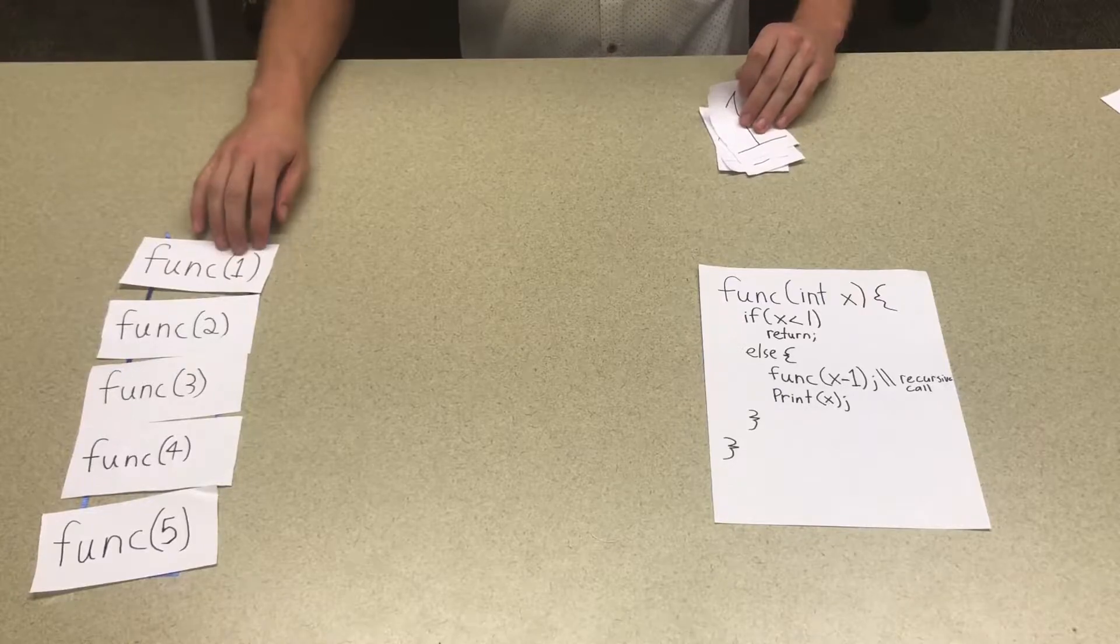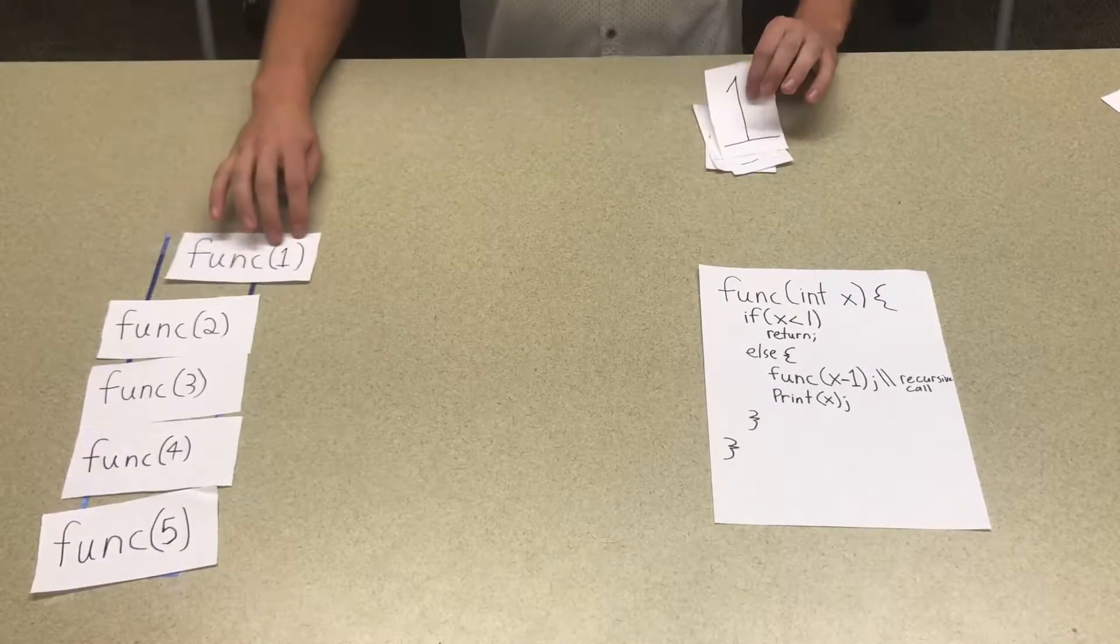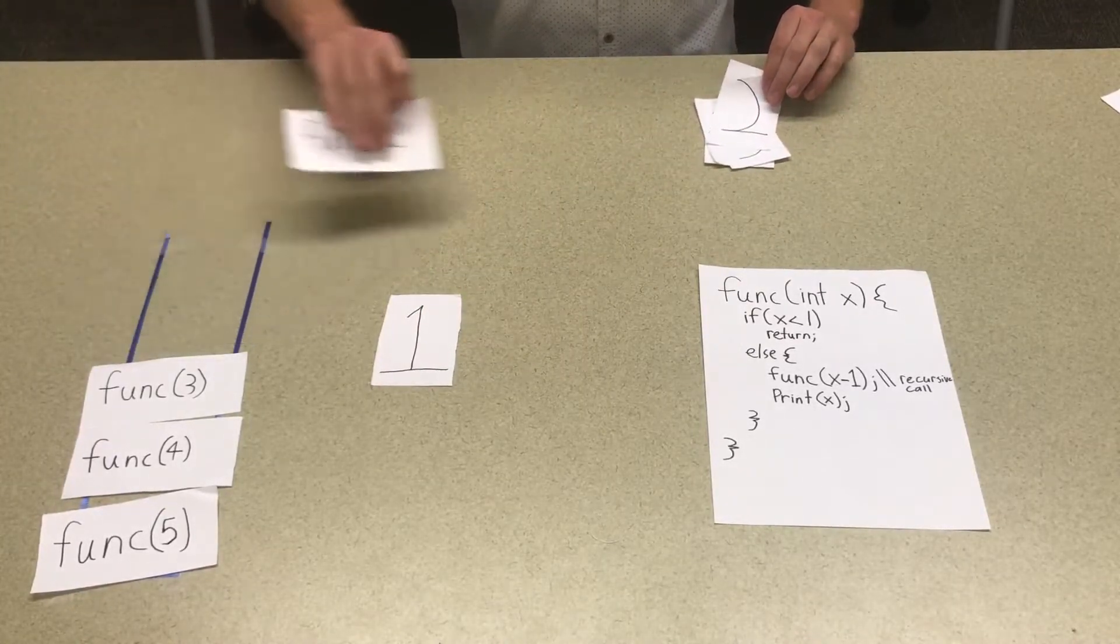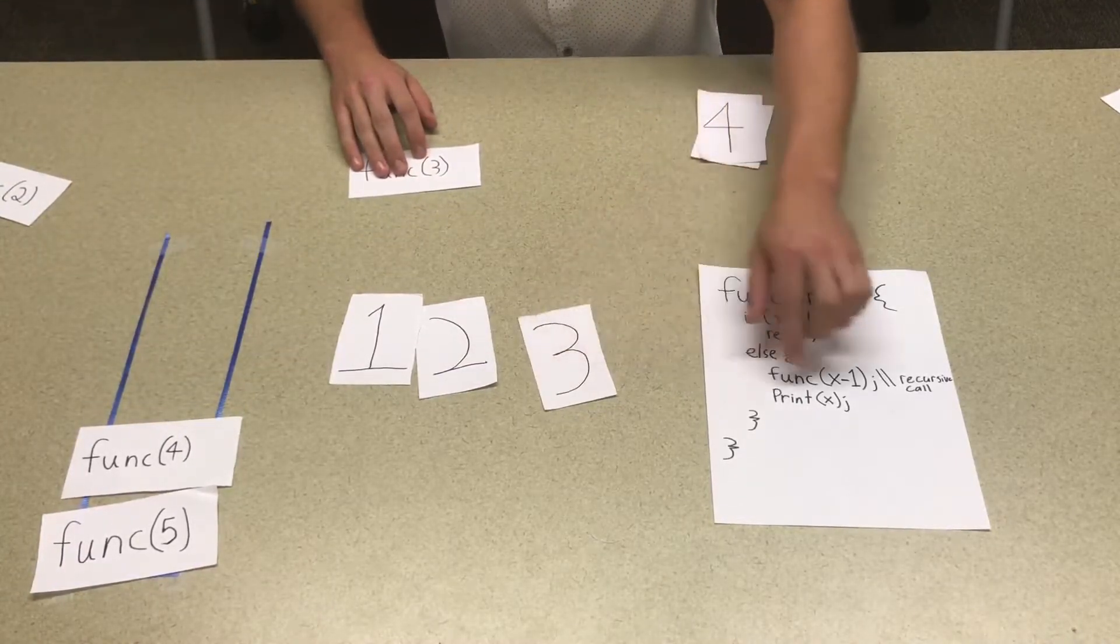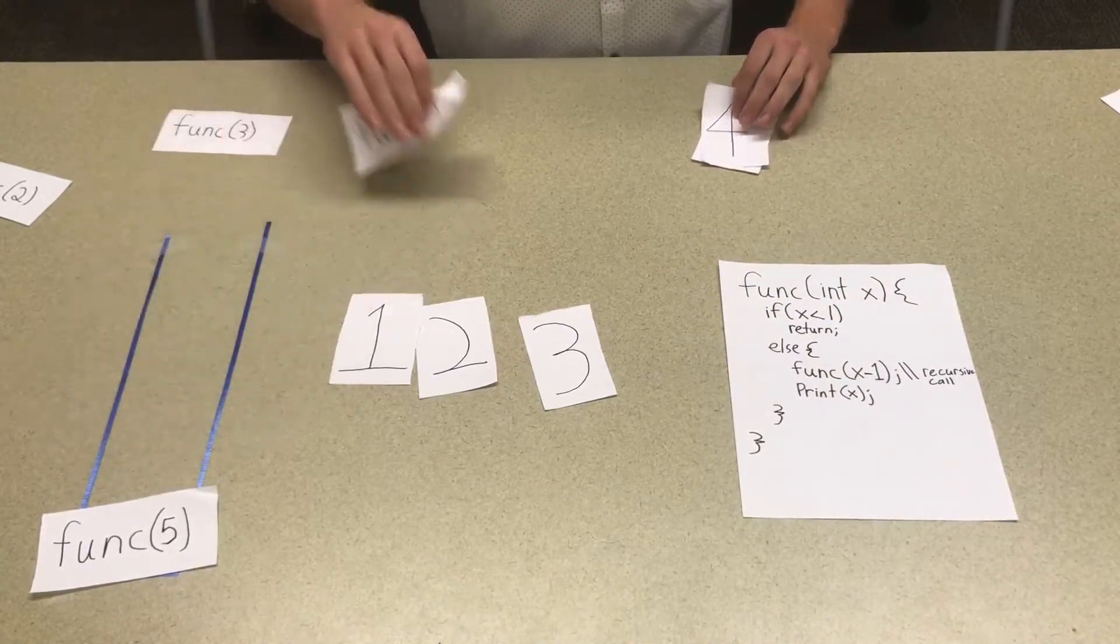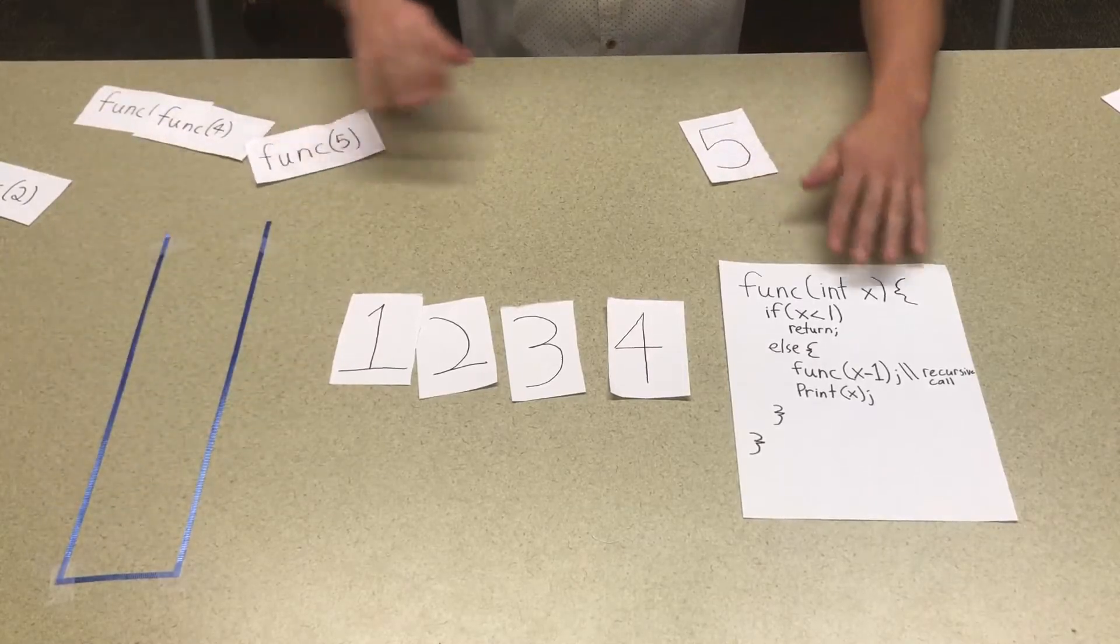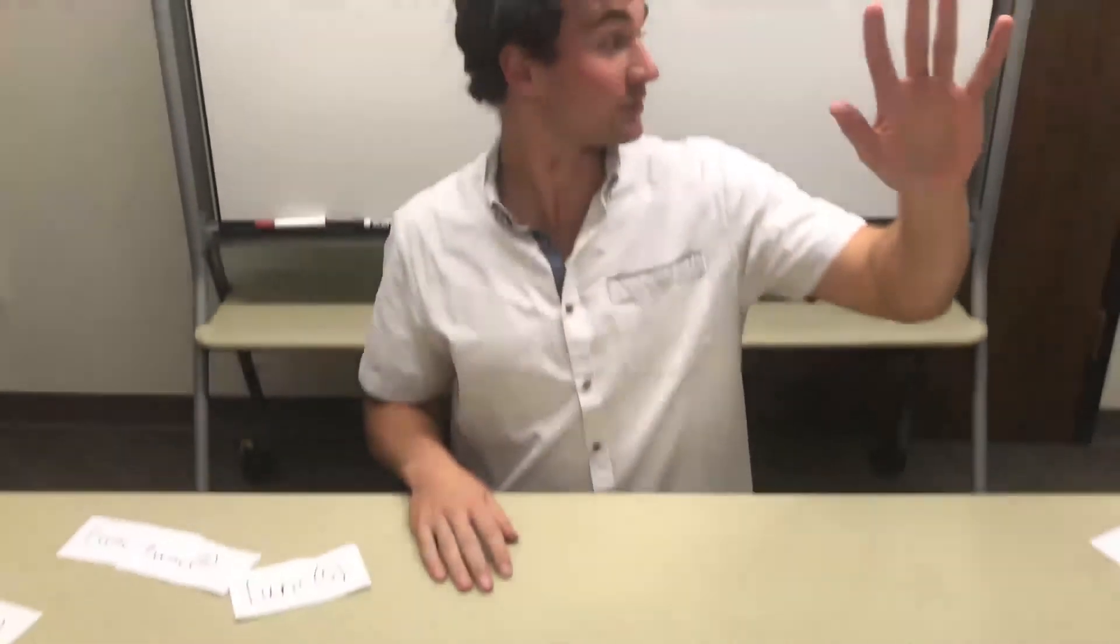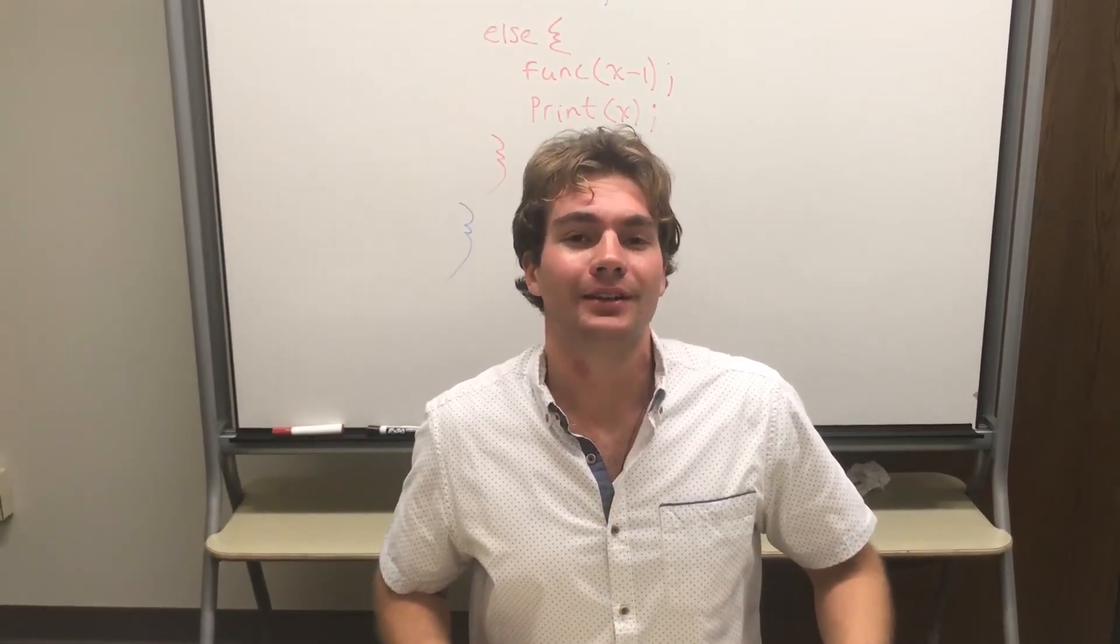Remember, stacks are LIFO. So we have the last item we pushed onto it is the first that we pop off. So funk 1 will print 1. Pop again. Funk 2 will print 2. Pop again. Funk 3 will print 3. Because right here we just are printing out the value of x. Pop. Funk 4 will print 4. And last but certainly not least, funk 5 will print 5. And that's CompSci in 5 for you. That's recursive function calls. Join us next week for another riveting lesson.